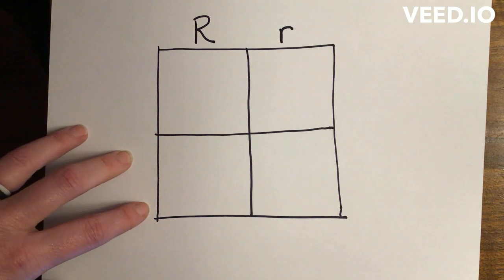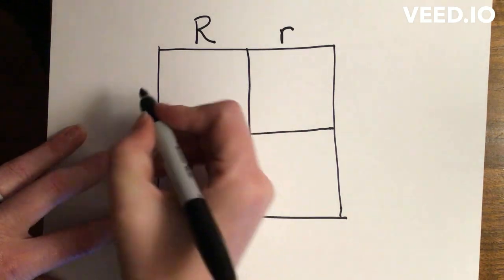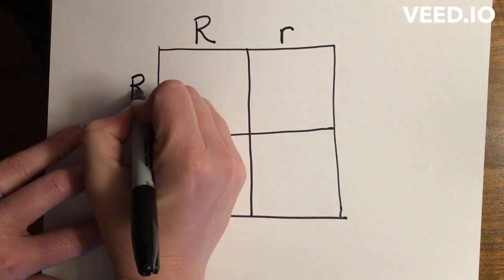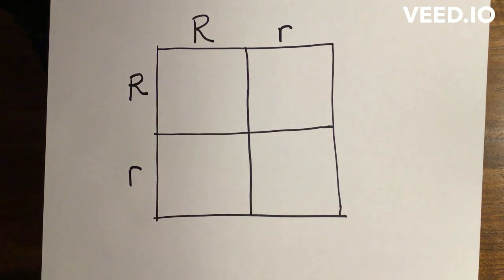But typically we write the capital letter first. We know the other parent is also heterozygous, so I'm going to put my other dominant allele there and my other recessive allele there.